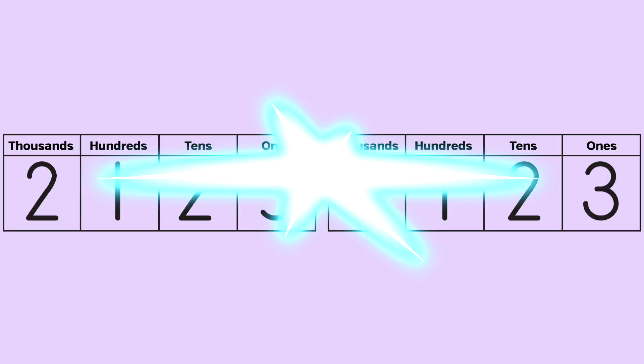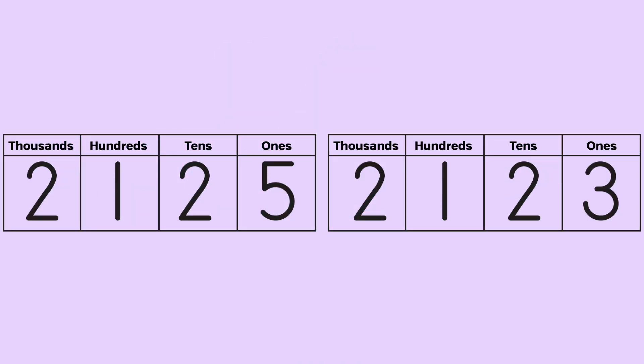Joey tried another pair, 2,125 and 2,123. Put the numbers into place value charts and compare. Start on the left. Both have the same number of thousands, hundreds and tens. But 2,125 has five ones and 2,123 only has three ones. 2,125 is greater than 2,123.